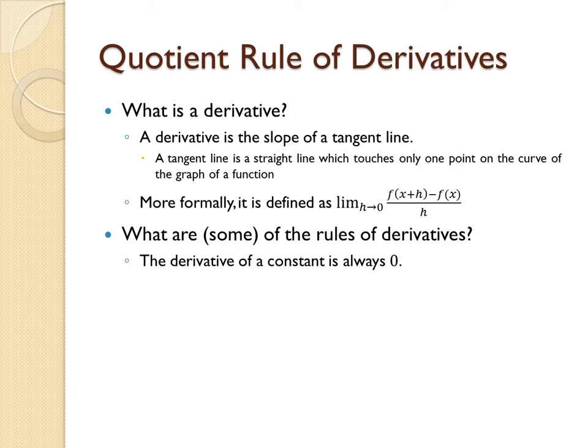First, the derivative of a constant such as the number 5 is always 0. Second, there is the power rule, which states that the derivative of x to the n power is n times x to the n minus 1 power.